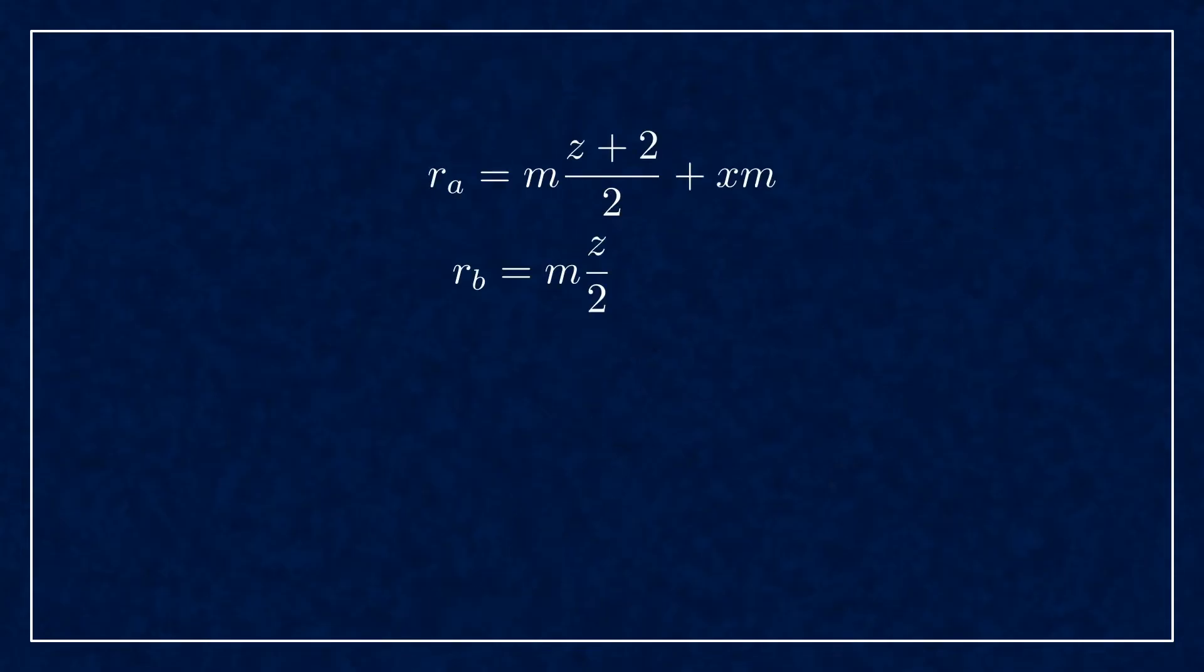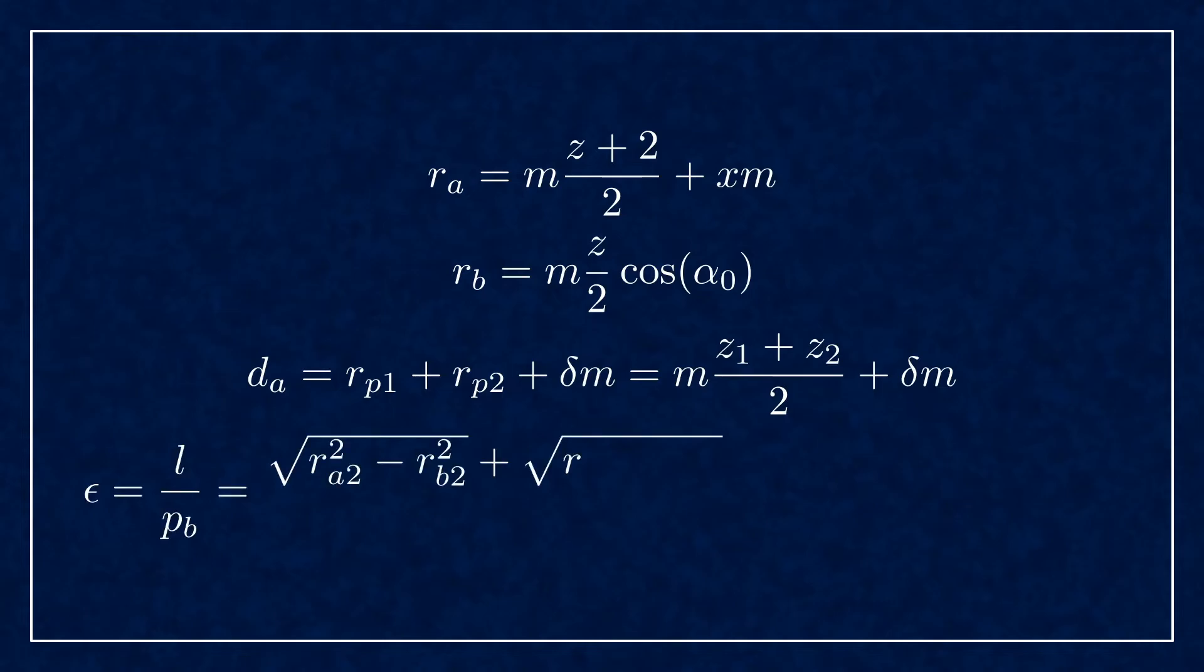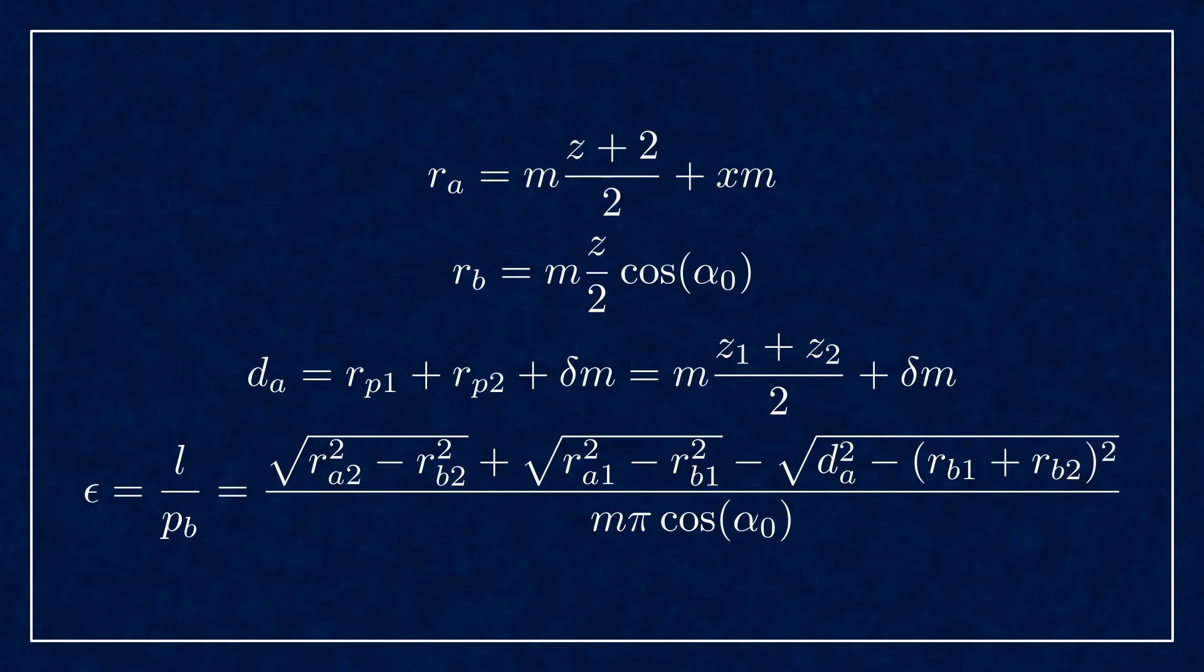Putting it all together, here's the formula for the contact ratio with some reminders to see what's what. So recall that the addendum radius is just one module larger than the pitch radius. So Z plus 2 over 2 times module, plus profile shift if you have any.